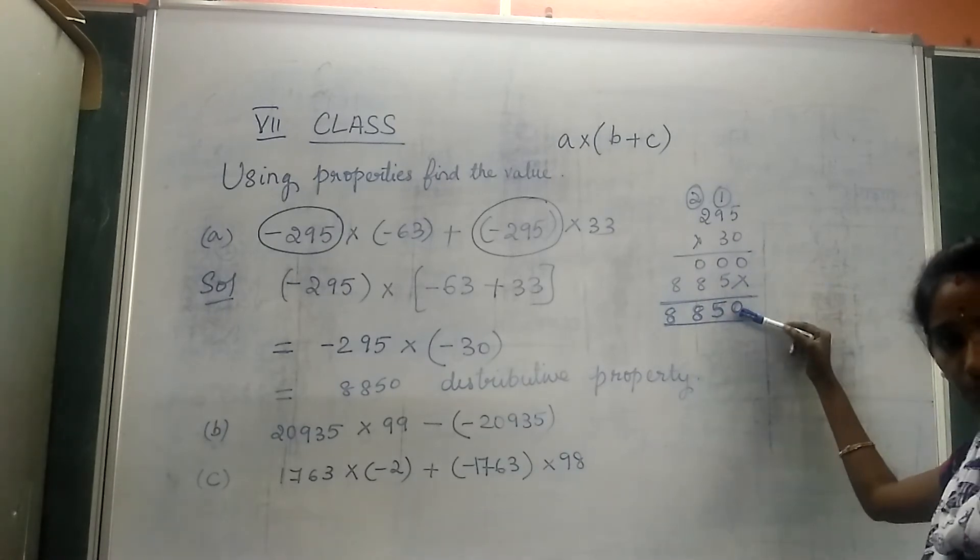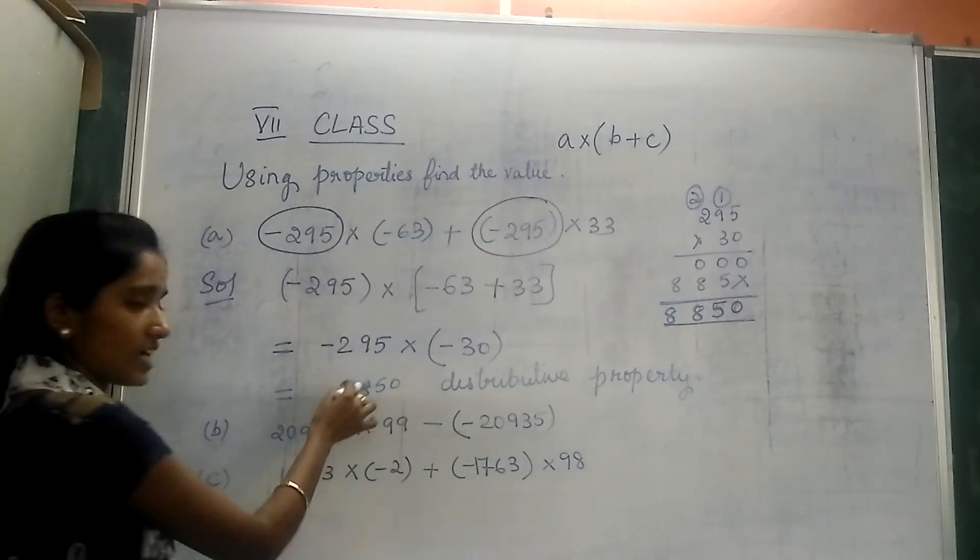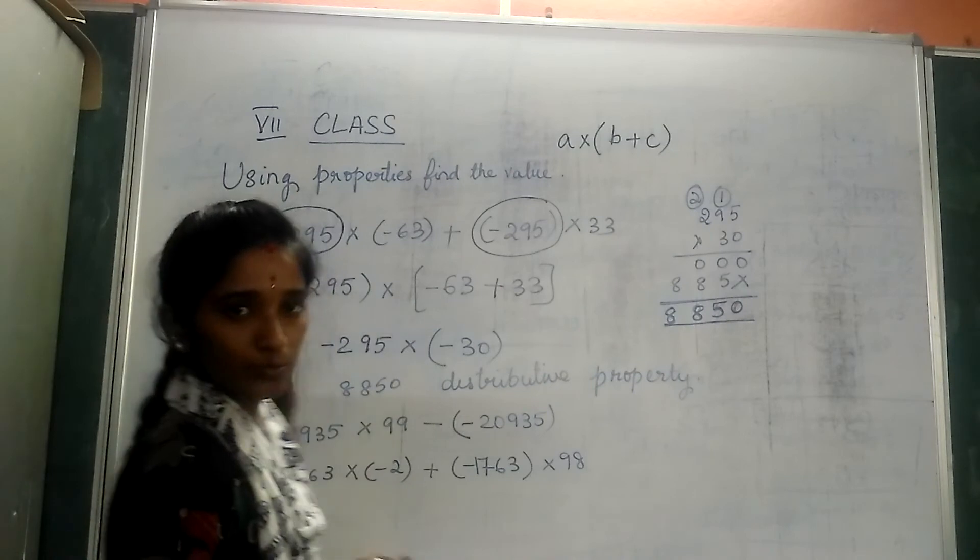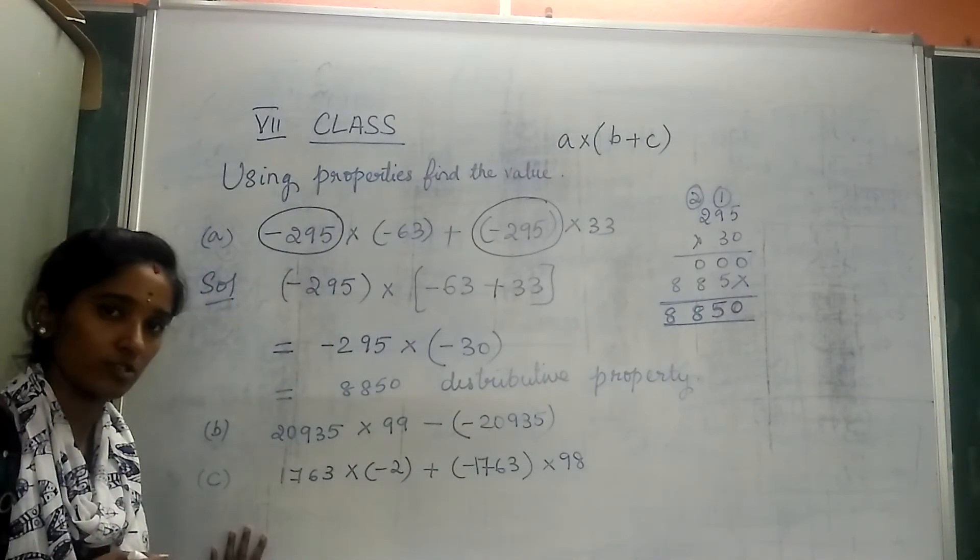Here 0 remains the same. So what we got as the answer now? 8,850. This is your distributive property. So based on this property there are two more questions we can ensure.